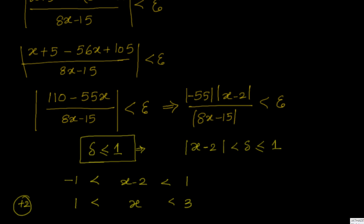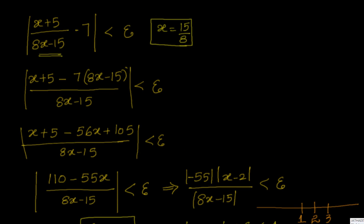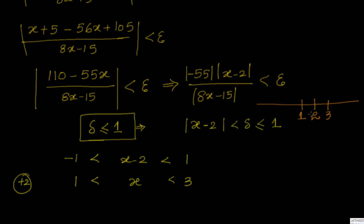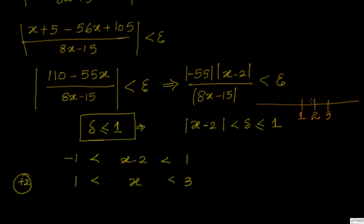What is the meaning of delta less than or equal to 1? Let's try to plot this and see. We are talking about x = 2. Delta = 1 means we want to go to 1 and 3 on either side. But 1.875 is somewhere nearby and you can't avoid it. So what we will do is try to reduce delta.